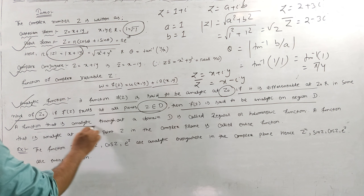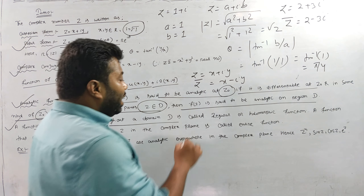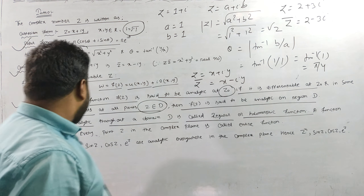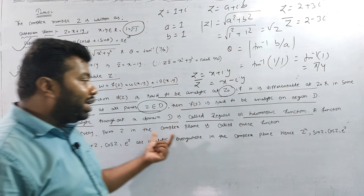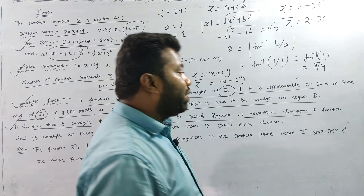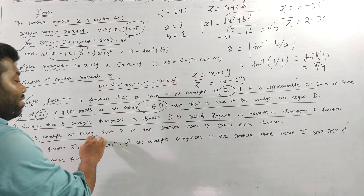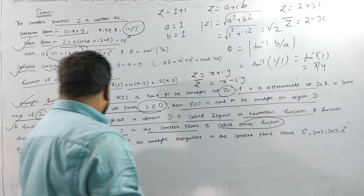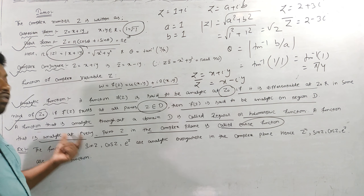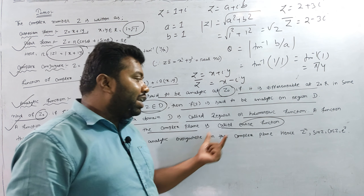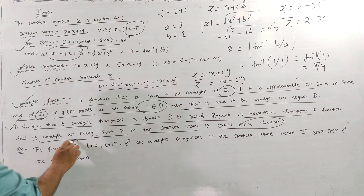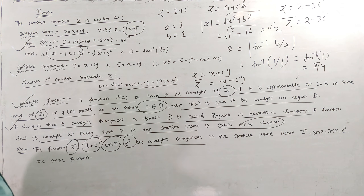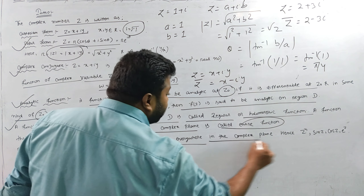A function analytic throughout the domain D is called a regular or holomorphic function. This function is analytic at every point z in the complex plane; it is called an entire function. For example, z to the power n, sin z, cos z, and e^z are analytic everywhere in the complex plane — these are entire functions.